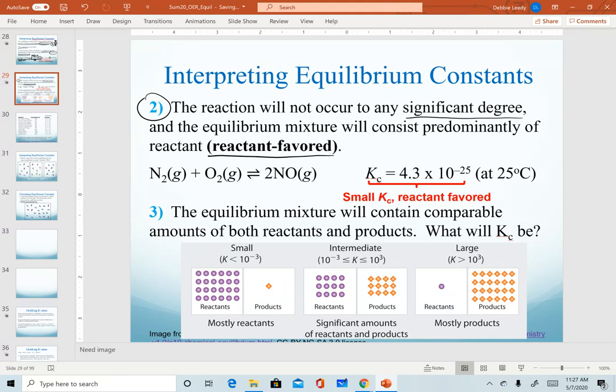A great example here would be the reaction between nitrogen and oxygen. These are of course both found in air, both very stable molecules. Since they're both very stable, there's no need for them to undergo a reaction to form nitrogen monoxide. And in fact, when we look at our Kc value 10 to the minus 25, that is very, very, very small. And so this is a very reactant favored system.